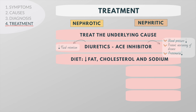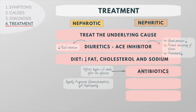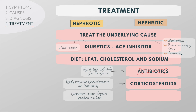When a bacterial infection is suspected as the cause of acute glomerulonephritis, antibiotics are usually ineffective because the disease begins one to six weeks after the infection. Some autoimmune disorders such as rapidly progressive glomerulonephritis and IgA nephropathy are treated with corticosteroids. Diseases such as Goodpasture's disease, Wegener's granulomatosis, and certain subtypes of lupus may require treatment with cytotoxic agents such as cyclophosphamide and azathioprine.